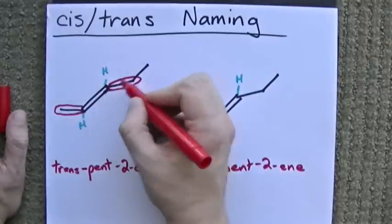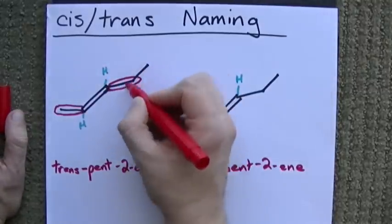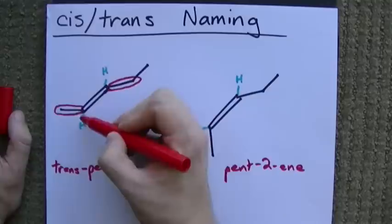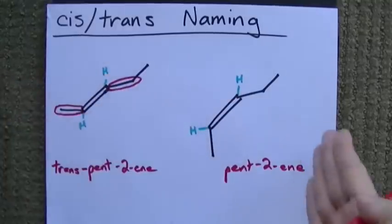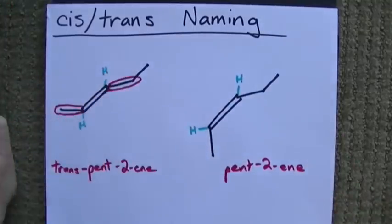So between these two things, this carbon chain is more important. Between these two things, this carbon chain is more important. And they're on opposite sides of the double bond. So it's trans.